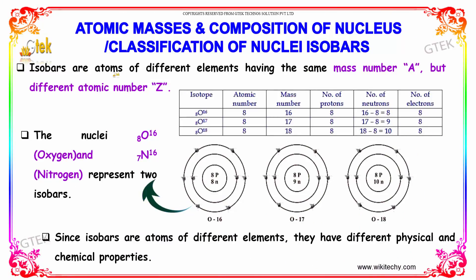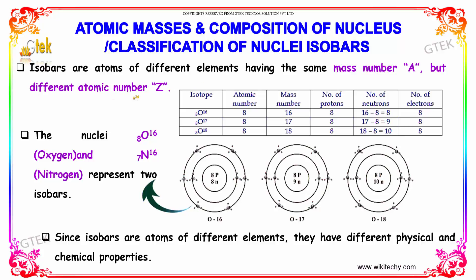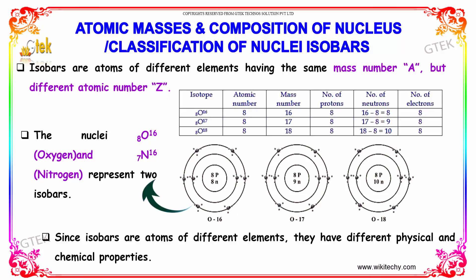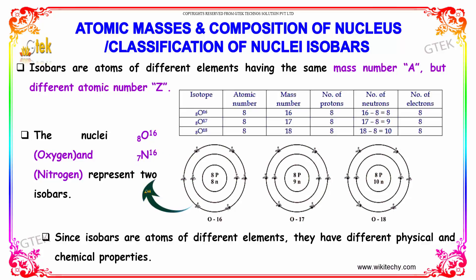Isobars are atoms of different elements having the same mass number A, but different atomic number. For example, the nuclei oxygen-16 (atomic number 8) and nitrogen-16 (atomic number 7) represent two isobars.